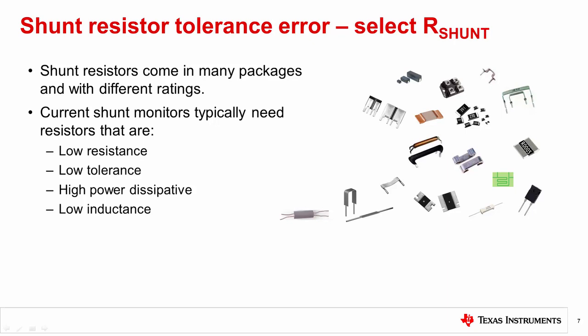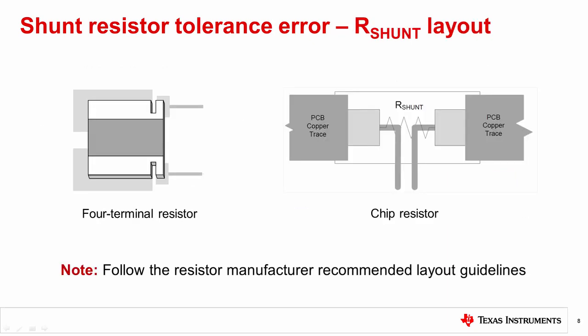See the other videos in this series for more help on selecting an appropriate shunt resistance. For resistors with Kelvin connection leads, or atypical geometries, follow the manufacturer guidelines regarding layout. Sometimes these resistors have a tolerance based on where they were measured when they were fabricated and trimmed at the factory. If you don't follow their guidelines, you may end up well outside the stated tolerance of the resistor. See the other videos in this series for more help on shunt resistor layout.